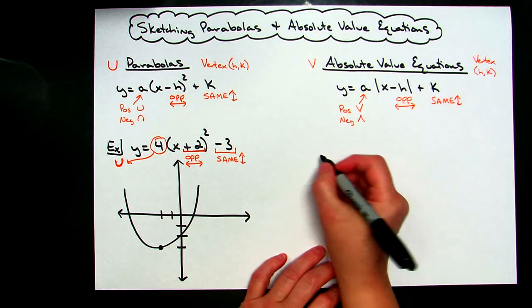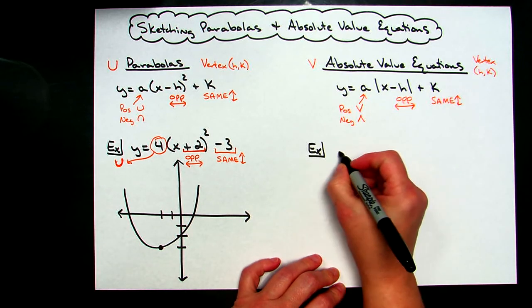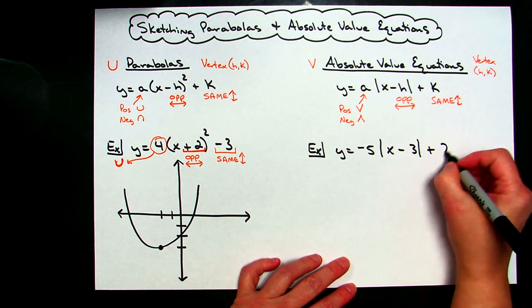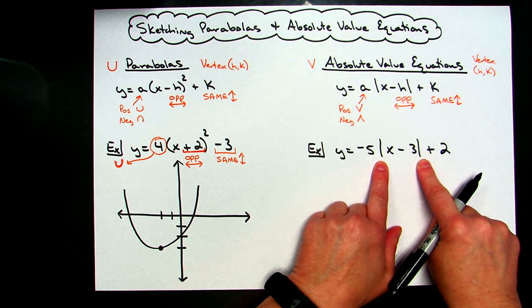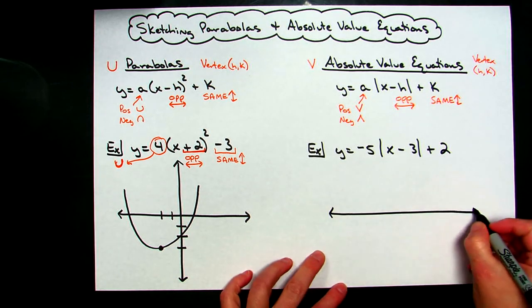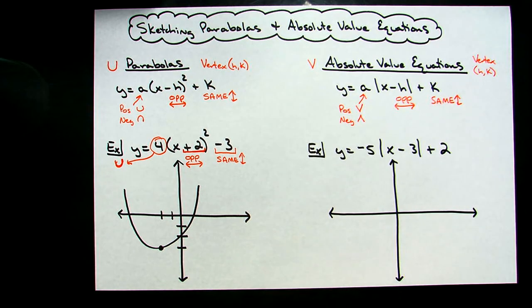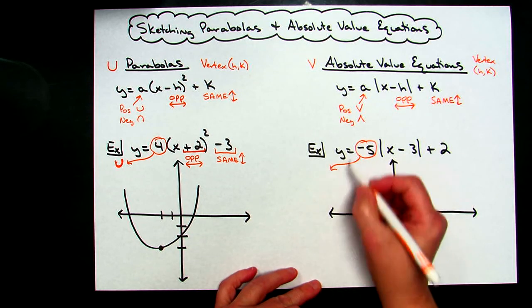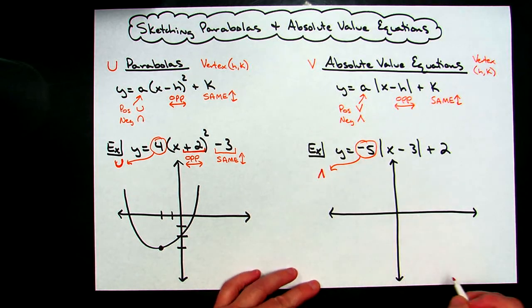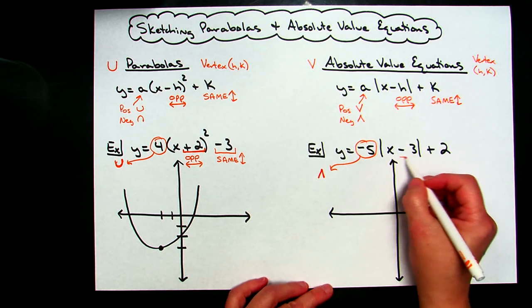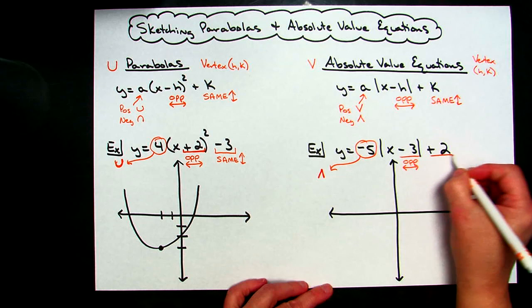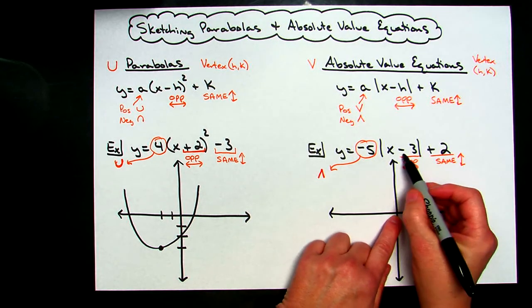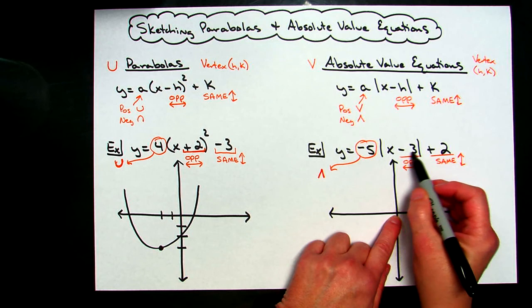Now for an absolute value example: y equals negative 5 times the absolute value of (x minus 3) plus 2. Right away I see the absolute value bars so I know it's going to be a V. The leading coefficient is negative, so that tells me the V is going to be upside down. The inside number tells me how to shift opposite left or right, and the outside number tells me how to shift the same up or down, always from the origin.